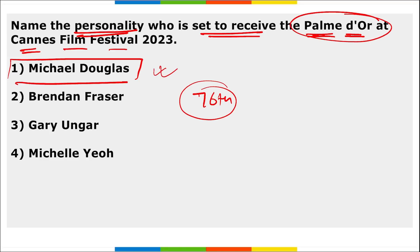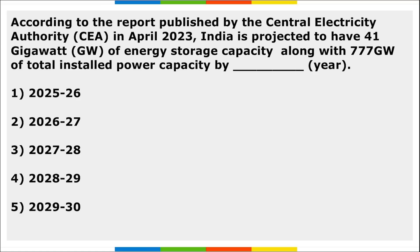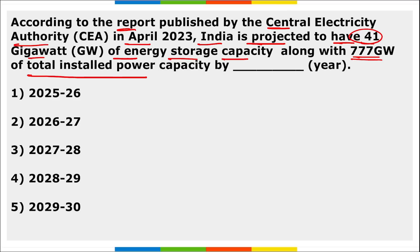According to a report published by the Central Electricity Authority in April, India is projected to have 41 gigawatts of energy storage capacity along with 777 gigawatts of total installed power capacity by the year 2029-30.